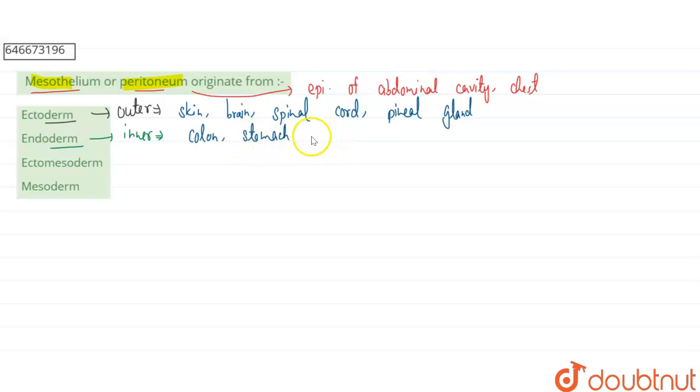The intestine also develops from endoderm. These are several visceral organs that are produced from endoderm, and it can also develop into the lungs as well as the liver.